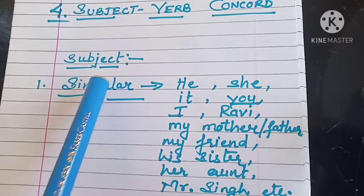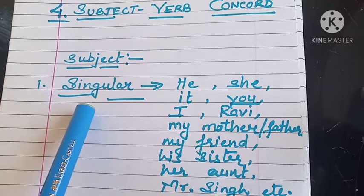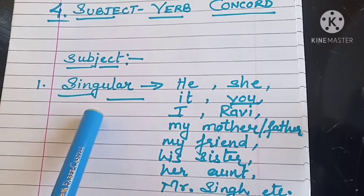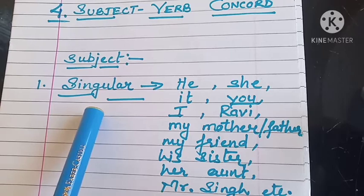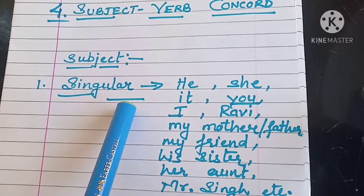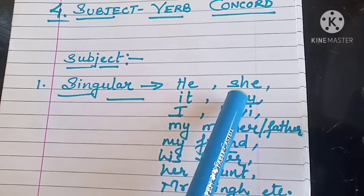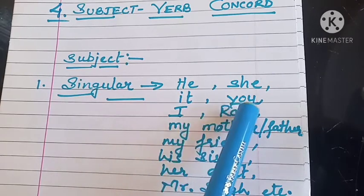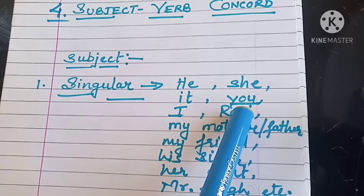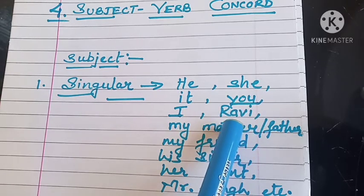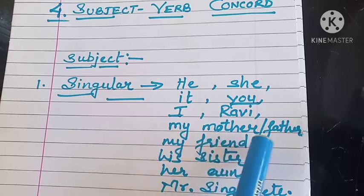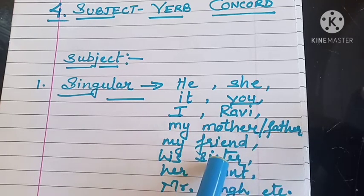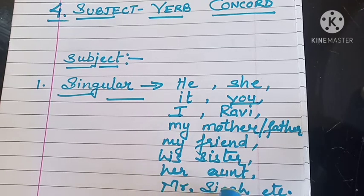Subject can be of two types: singular and plural. Let's see what singular subjects are possible. A singular subject can be: he, she, it, I, you — I have underlined 'you' because it is treated as plural — Ravi, my mother, my father, my friend, his sister, her aunt, Mr. Singh, etc.